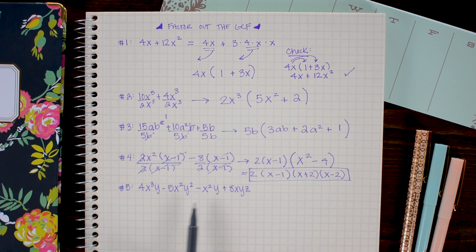For the final problem we are factoring out the GCF of 4x cubed y minus 5x squared y squared minus x squared y plus 8xyz. Now this problem looks a lot more difficult than it is just because it has a lot of terms and a lot of variables. You want to approach it just like any of our previous problems.